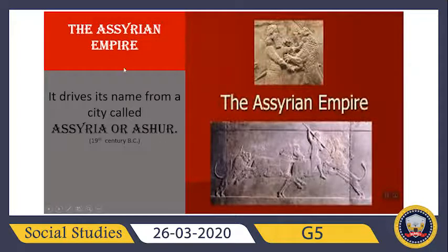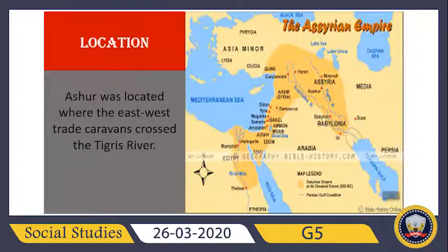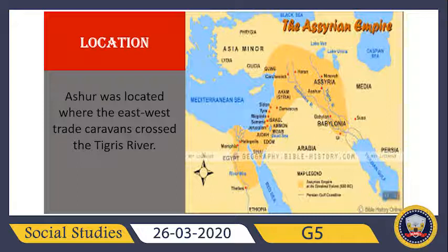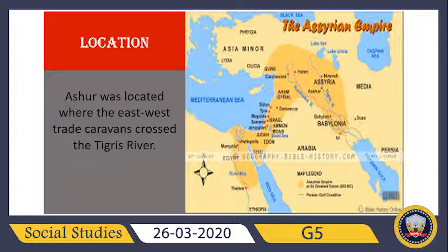Next, we will learn about its location — where was it located? Usher was the name of a city, and Usher was located where the east-west trade caravans crossed the Tigris River. When you open your books, you will find a clear map showing the location of the Tigris River and the Arabian Gulf. The map in your book is clearer than the one shown here. The Assyrians were actually located where east-west trade caravans used to cross that area.